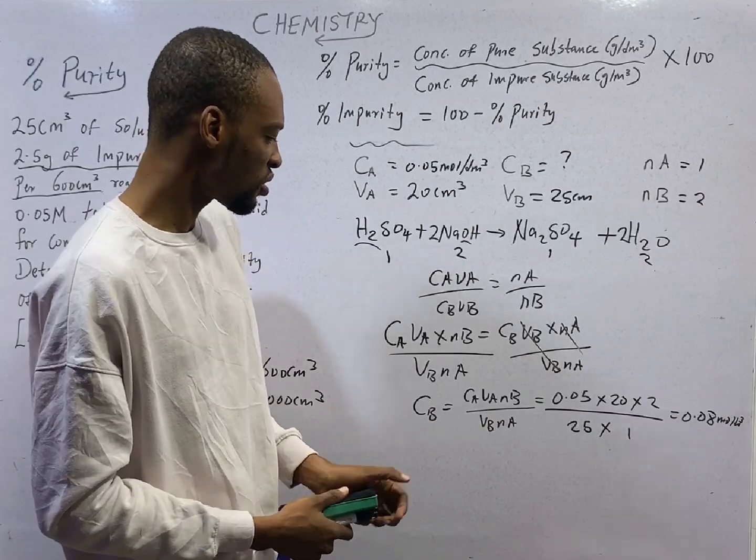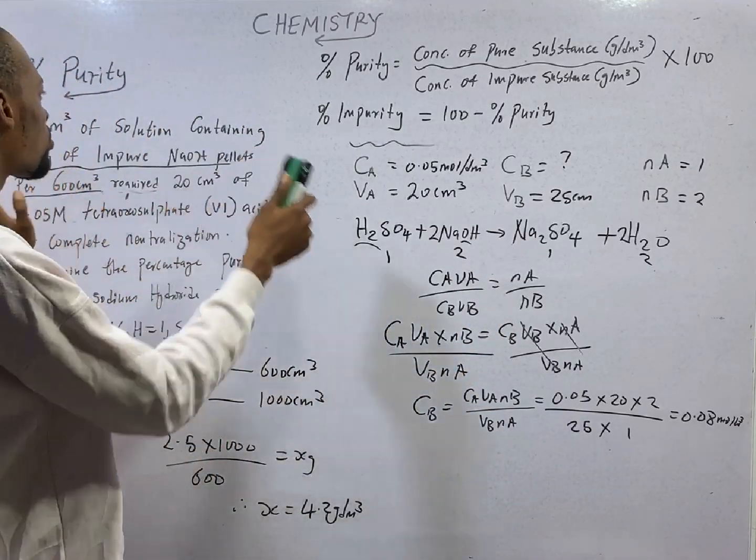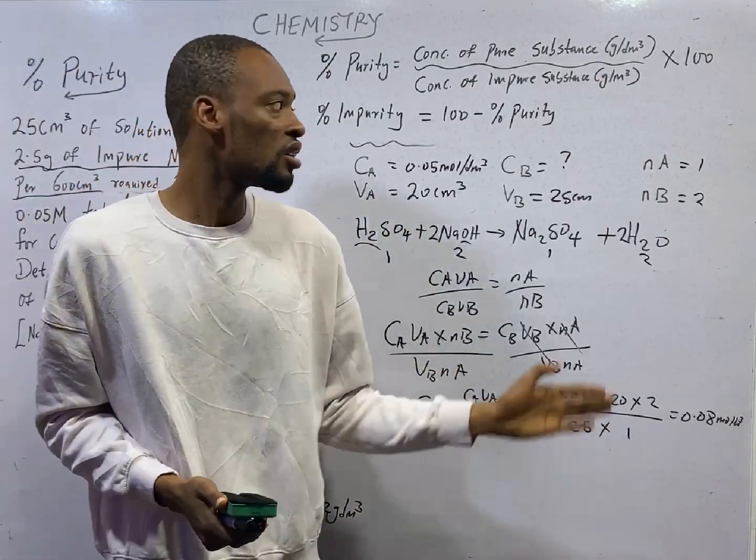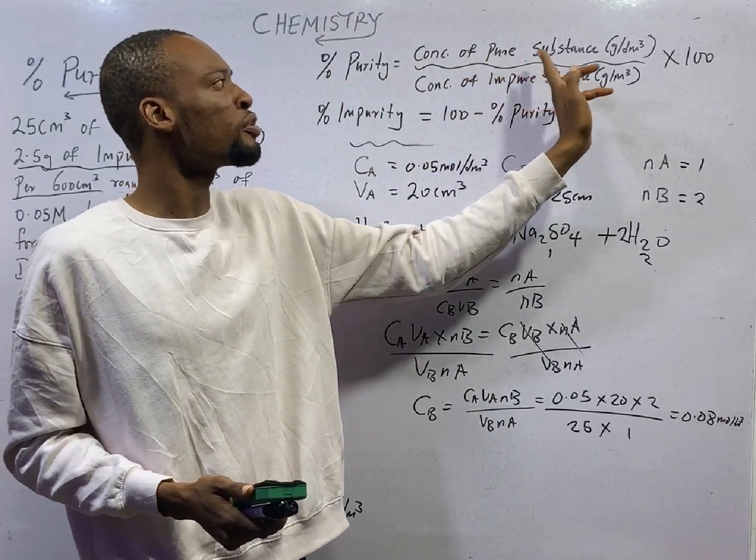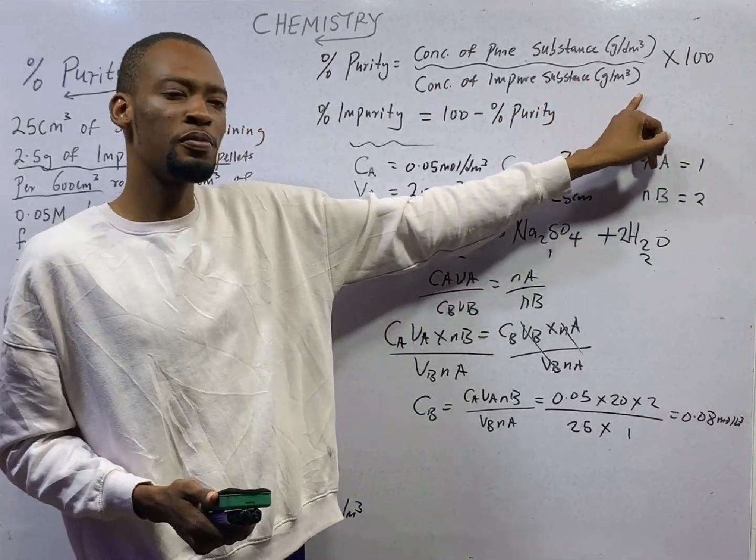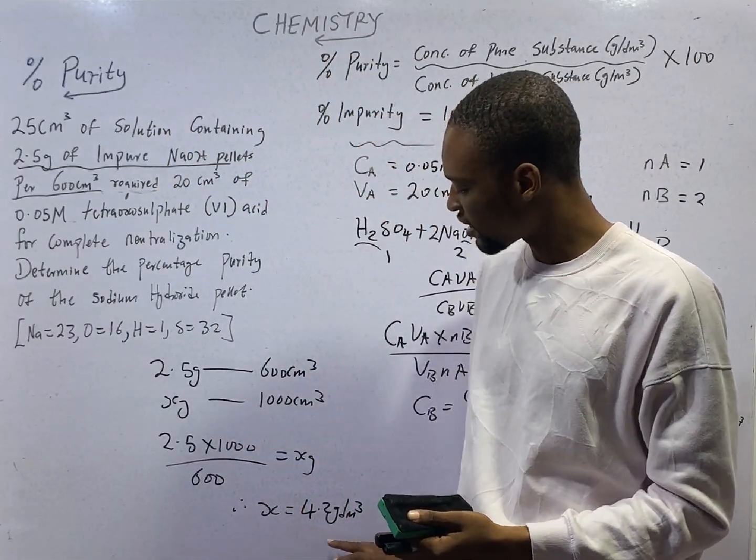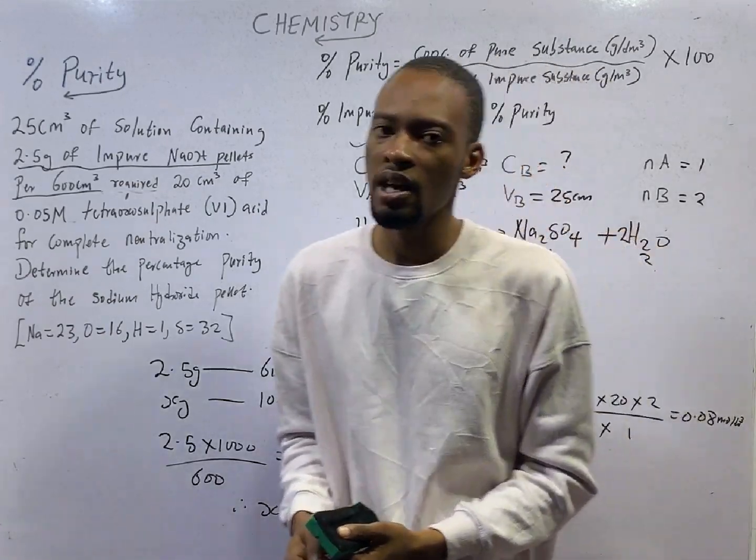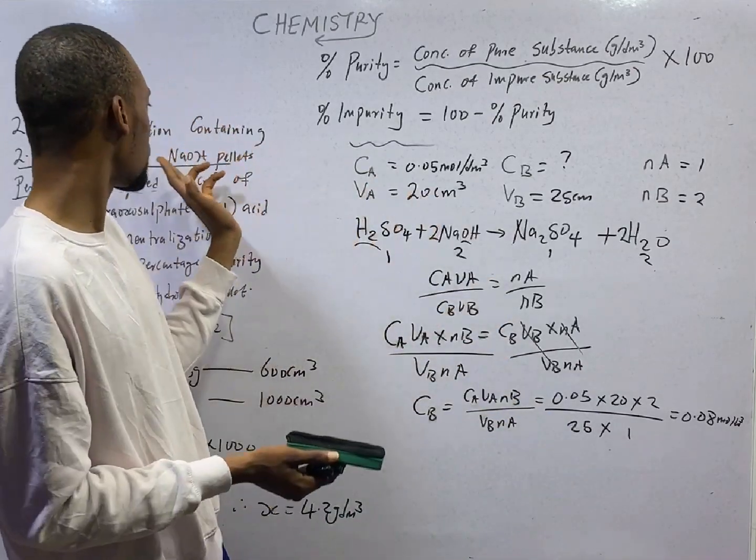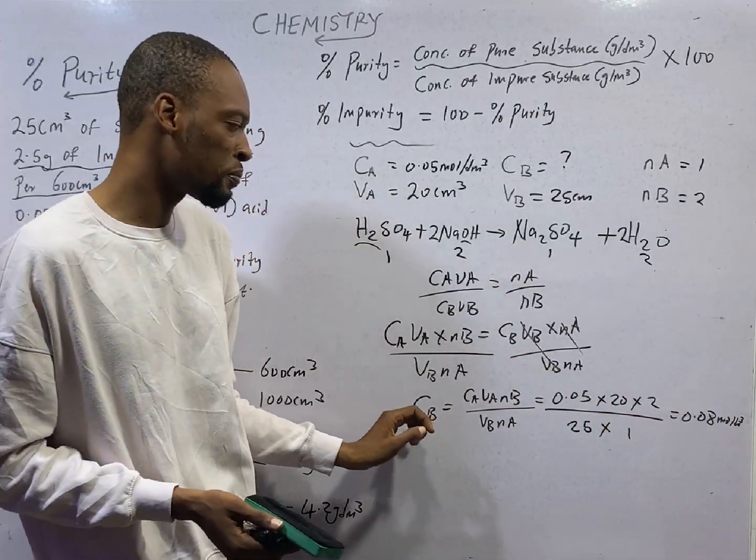Now this concentration is for the pure base because here is the impure sodium hydroxide and what you get from calculation is the concentration of the pure substance. But look at this. The formula says percentage purity is concentration of pure substance in grams per dm³ over concentration of impure substance in grams per dm³ times 100. We've gotten the concentration of the impure substance in grams per dm³ to be 4.2 grams per dm³. And we've gotten the concentration of the pure sodium hydroxide in moles per dm³. We need to convert this concentration in moles per dm³ to grams per dm³.